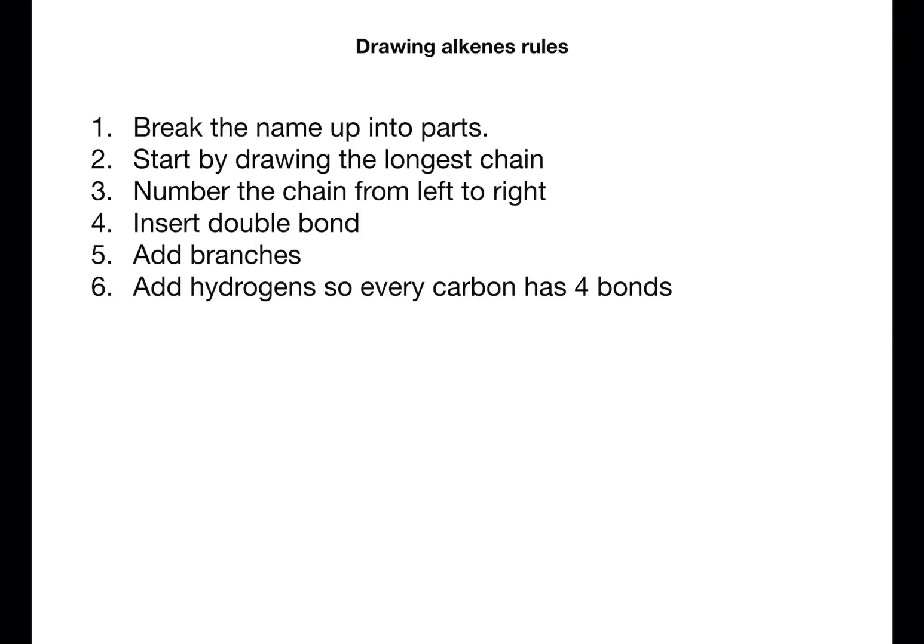Start by drawing the longest chain of continuous carbons. Number the chain from left to right and then put in the double bond starting at the number. Using the numbering system, add on the branches and then add hydrogens so that every carbon has four bonds, taking care around the double bonds.